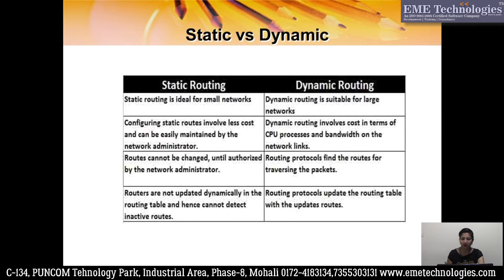The third difference: in static routing, routes cannot be changed until authorized by the network administrator, because it is manual configuration. When we do not change manually, routes do not change. In dynamic routing, it is automatic, so routers select paths themselves. The negative effect of static routing is that if there is a link down in the network, the routers don't know about it because it has not been configured to detect changes. But in dynamic routing, if there is a link down, routers send updates by sharing routing table information, so the routers know when a link is down.